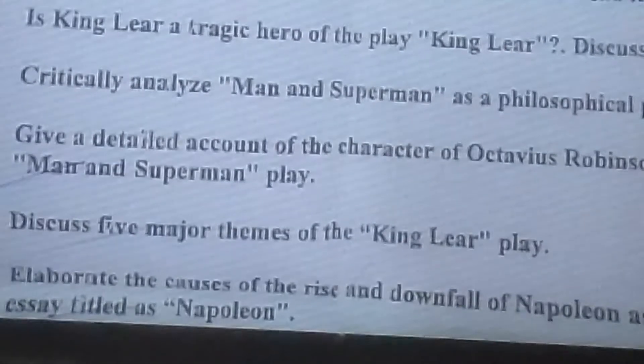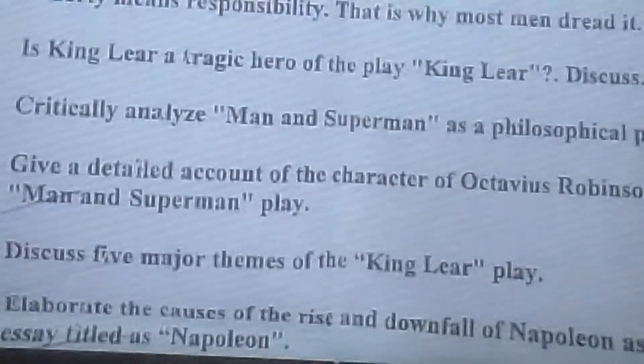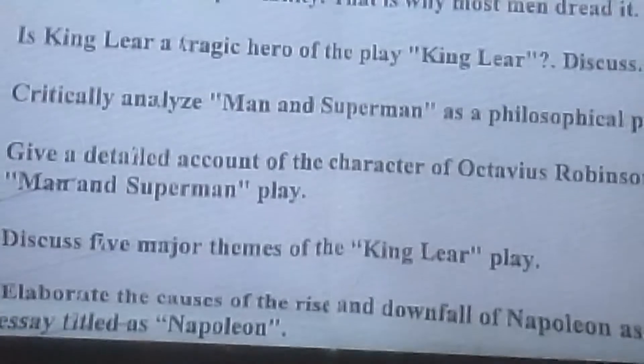The major themes of King Lear include madness, conflict, power, and evil, among others. Elaborate the causes of the rise and downfall of Napoleon as stated in the essay Napoleon — that is, from the Napoleon essay in Modern English, discuss what is covered there, give the summary of it simply. So from these, you have to attempt five questions. The first one is compulsory and must be done; from the remaining, attempt any four. That completes your paper. This was the paper of BA Part 2.